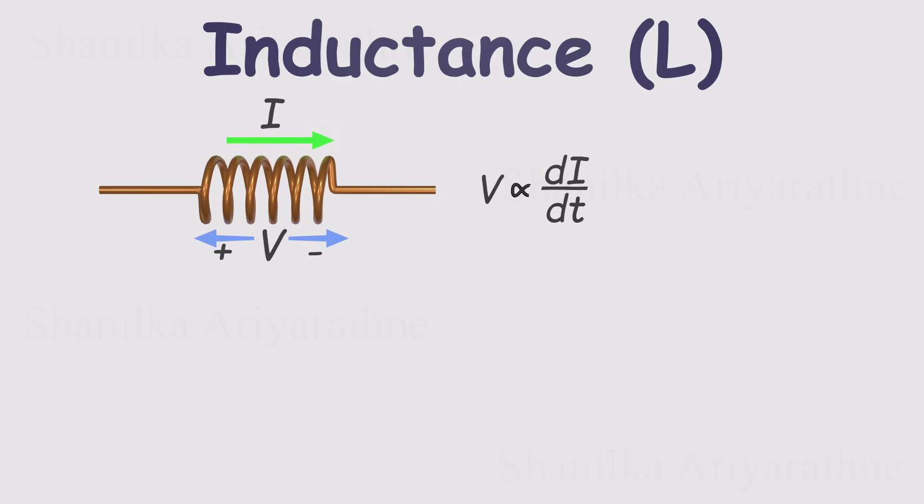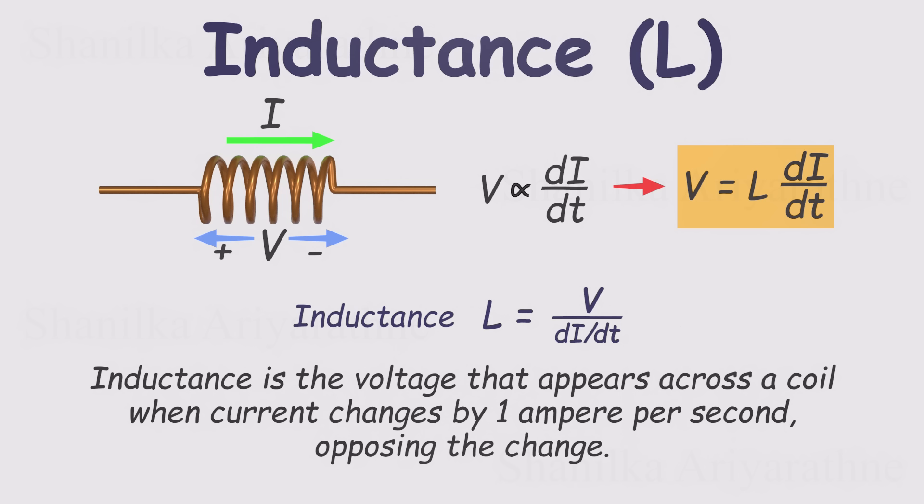With this understanding, let's move on to define inductance. If the voltage across an inductor is proportional to how quickly the current changes, we can express that relationship with a constant of proportionality. This constant depends on the physical dimensions and construction of the inductor, and that's what we call inductance. In simple terms, inductance is the amount of voltage that appears across a coil when the current through it changes at a rate of 1 ampere per second, opposing that change. Its unit is the volt second per ampere, or more simply, the Henry, symbol H, named in honor of the American inventor Joseph Henry. The inductance of a coil depends on its physical dimensions and construction.